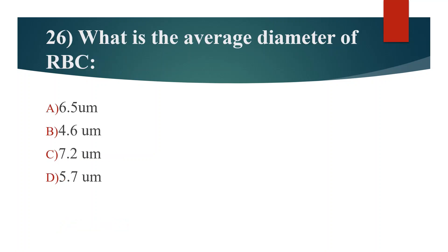Twenty-sixth question. What is the average diameter of RBC, that is red blood cells? Option A: 6.5 micrometer. Option B: 4.6 micrometer. Option C: 7.2 micrometer. Option D: 5.7 micrometer. Answer is Option C: 7.2 micrometer.